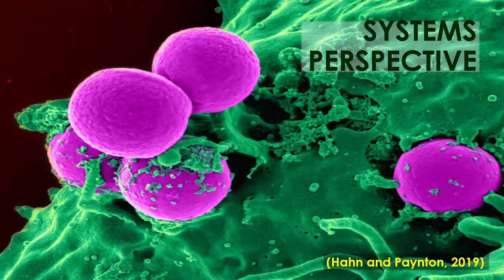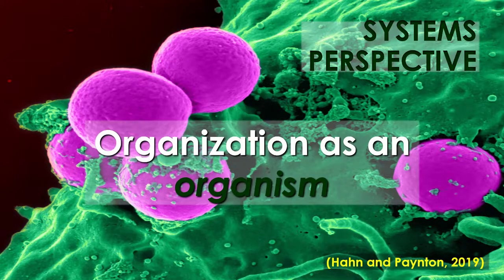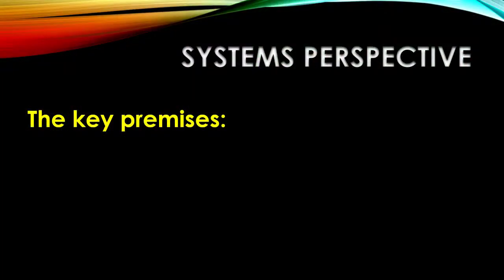There's a governing metaphor here as well. If classical management theories look at the organization as a machine, and human relations and human resources theories look at organizations as communities of people, a systems perspective looks at the organization as an organism — a living being that is complex and made of multiple parts that all operate synergistically in order for the entire living entity to survive and thrive within its larger environment. The key premises of this theory are relatively simple when you think about it from the standpoint of this metaphor.